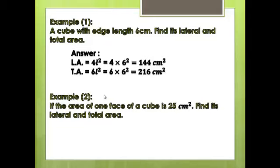For the total area: 6L² = 6 × 6² = 6 × 36 = 216 cm².